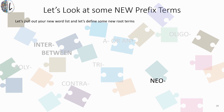Next is 'neo' — N-E-O. See if you can check that word list and see what that refers to. 'Neo' refers to being new, so something that is new.